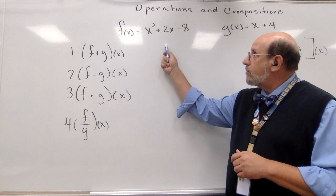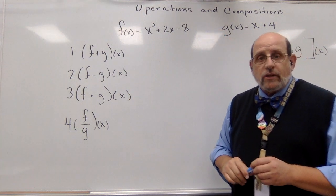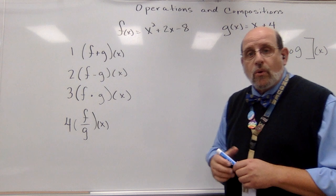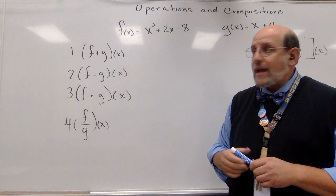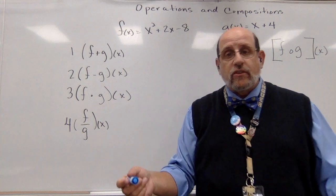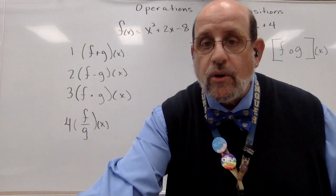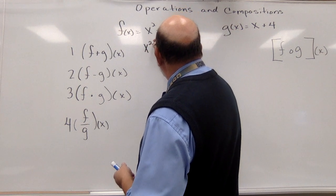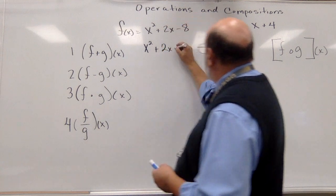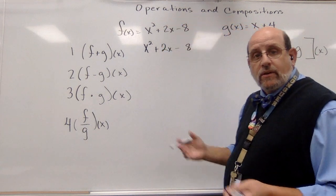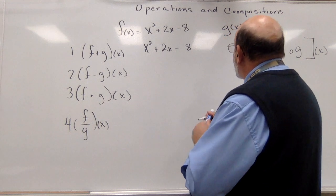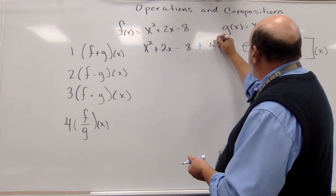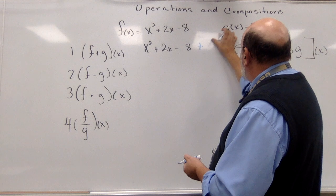I'm given two functions. The first function is this one, x squared plus 2x minus 8. The other function, g of x, is x plus 4. The first thing we have to do is let's add our f function and our g functions together. That's it. So let's go ahead. I'm going to write out the f function: x squared plus 2x minus 8. And then what am I going to do? I'm going to add to it. I'm going to add x plus 4 to it. Not 4 plus x, x plus 4.